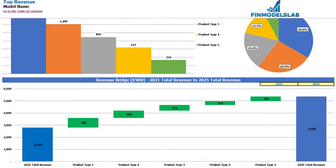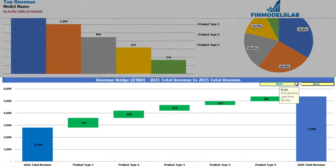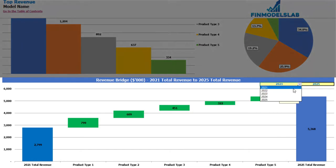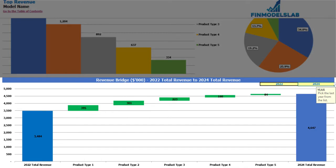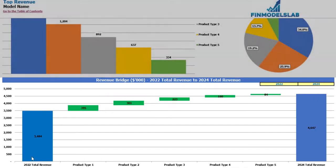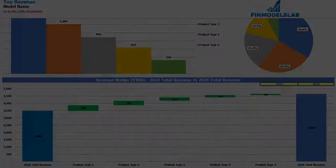You may review the revenue details and monthly run rate for, for example, 2024. And finally you may see the revenue bridge between two years, which are also changeable. So you can set up for example from 2022 to 2024 and you may see the main drivers of your revenue growth by different product types.